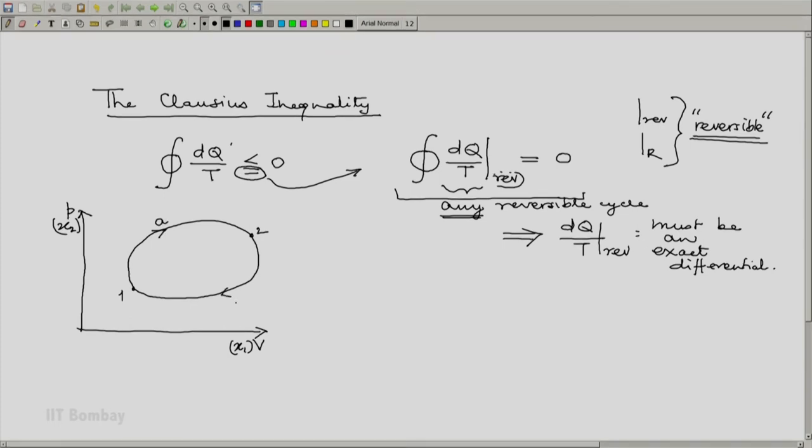And let us say that 1a2b1 is one way of traversing the cycle. And this equality part of the Clausius inequality tells us that expanding this, this will be cyclic integral of dq by t reversible over the cycle 1a2b1. This is a reversible cycle. This will be 0.